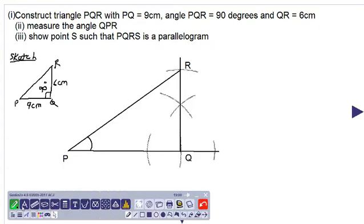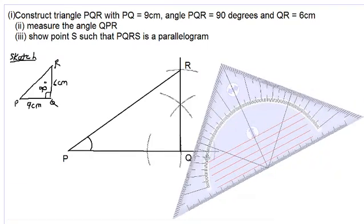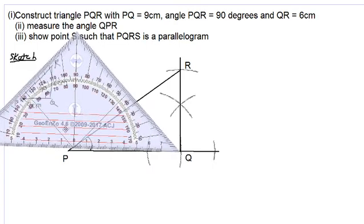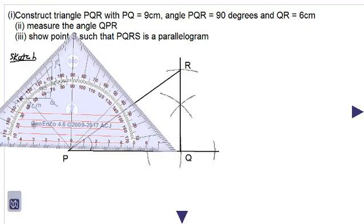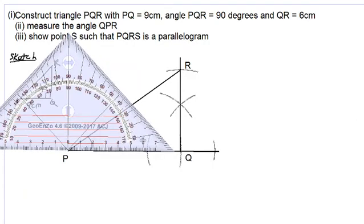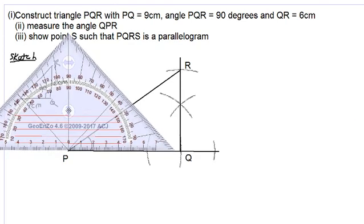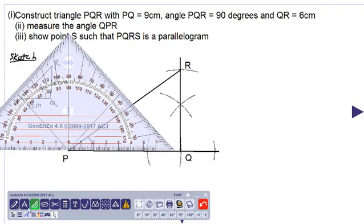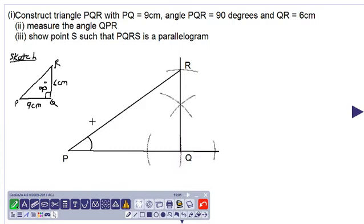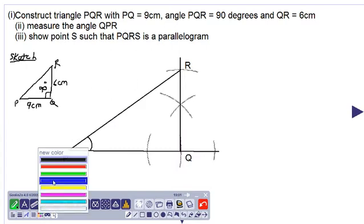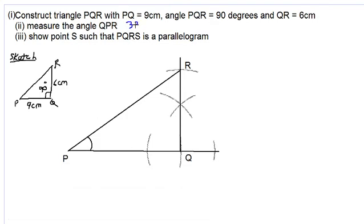We will use our protractor to measure angle QPR. So it is about 33 degrees. So we will write that it is about 33 degrees. Now let us make some room here.